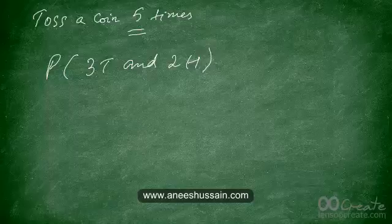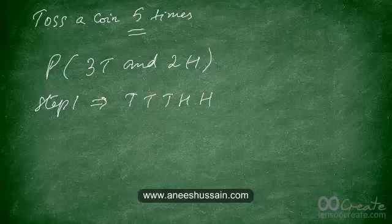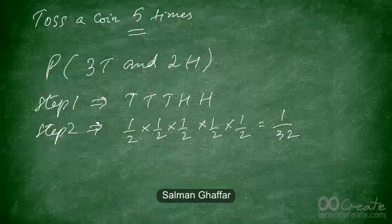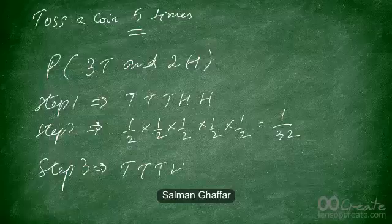Step 1: write down one favorable outcome — Tail, Tail, Tail, Head, Head. Step 2: find the probability of this outcome — 1/2 × 1/2 × 1/2 × 1/2 × 1/2 = 1/32. Step 3: multiply that answer by the number of possible arrangements of TTTHH.